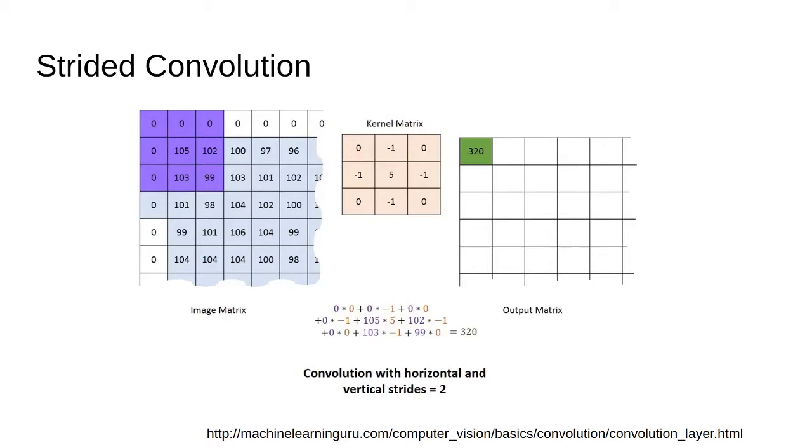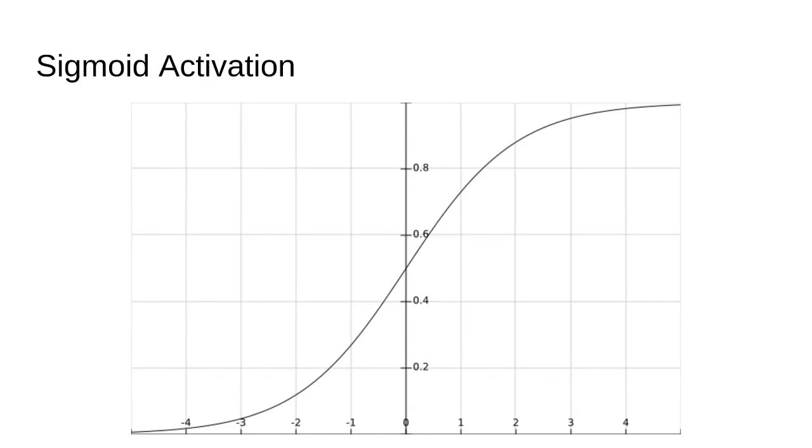this is called convolution with stride equals 2, or more commonly, strided convolution. It turns out that this technique allows GANs to learn better downsampling and upsampling filters. The resulting images this way are going to have fewer artifacts. The same applies to convolution and transpose convolution.